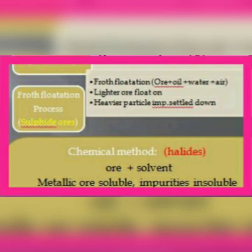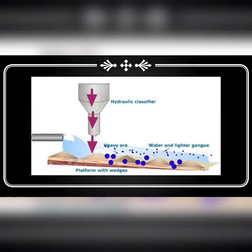Let us see how to concentrate. The first one, gravity process. First of all, the ores should be finely powdered and we use water and compressed air or we use steam. What happens? When it is passed through on the finely powdered metals, the lighter particles washed away and the heavier metals settled down.